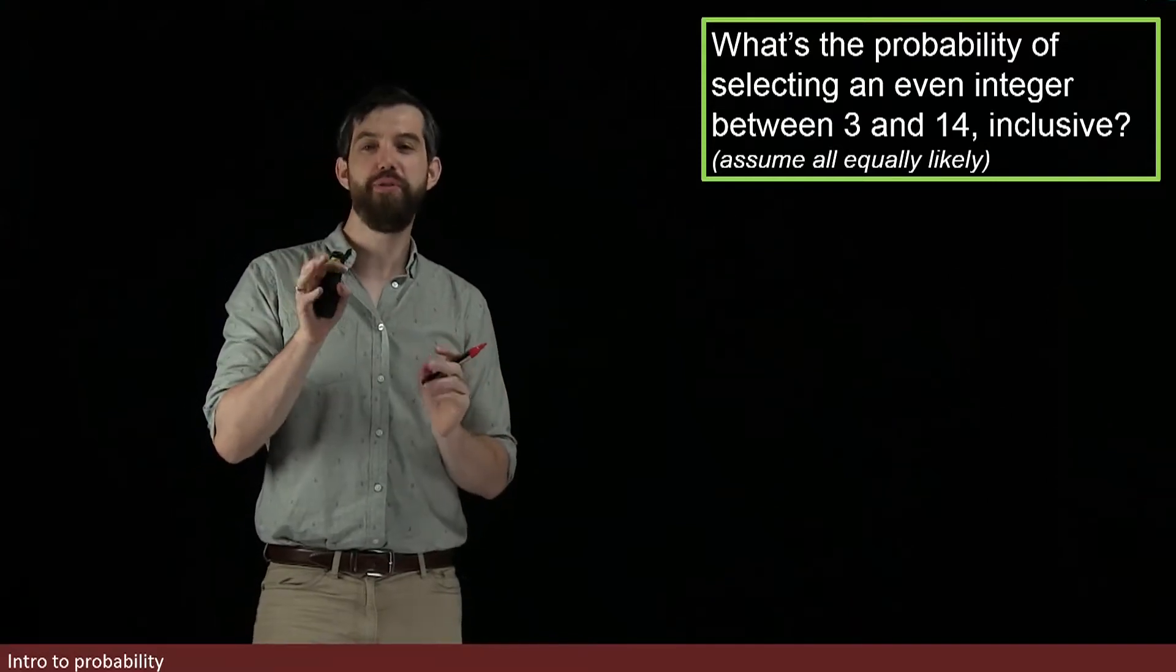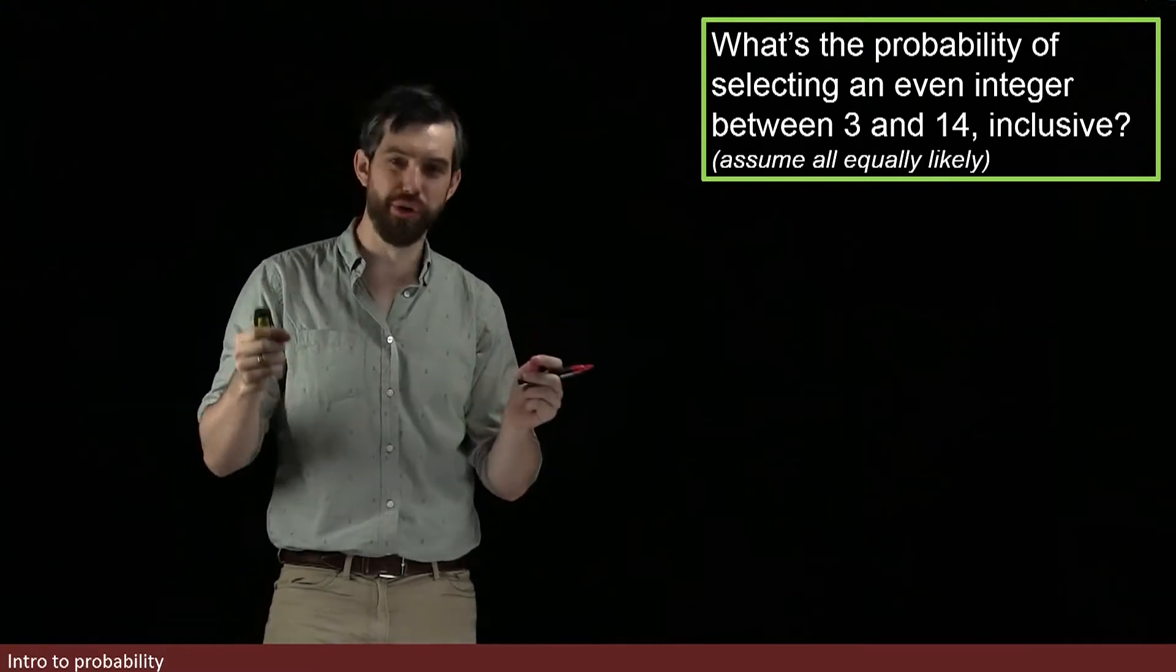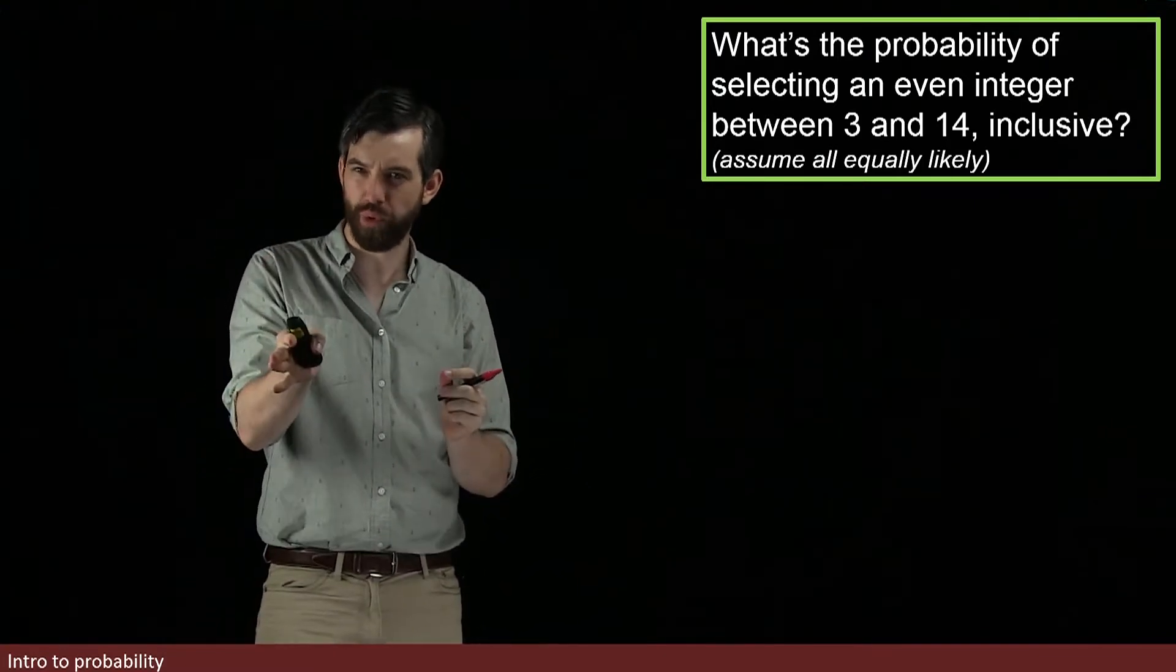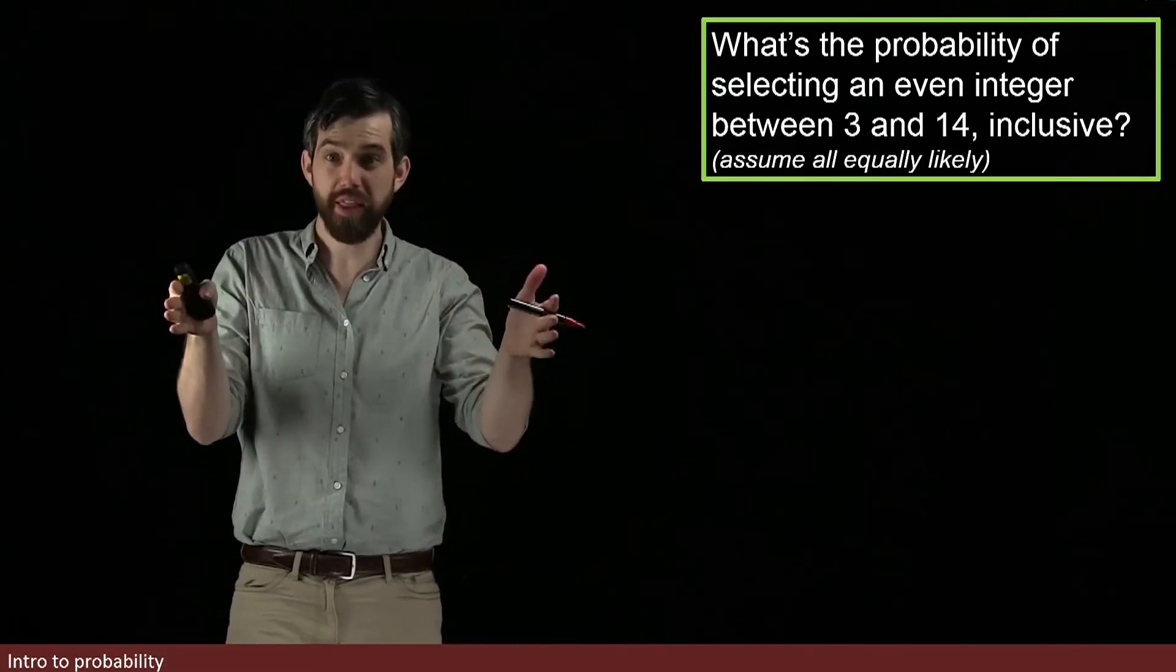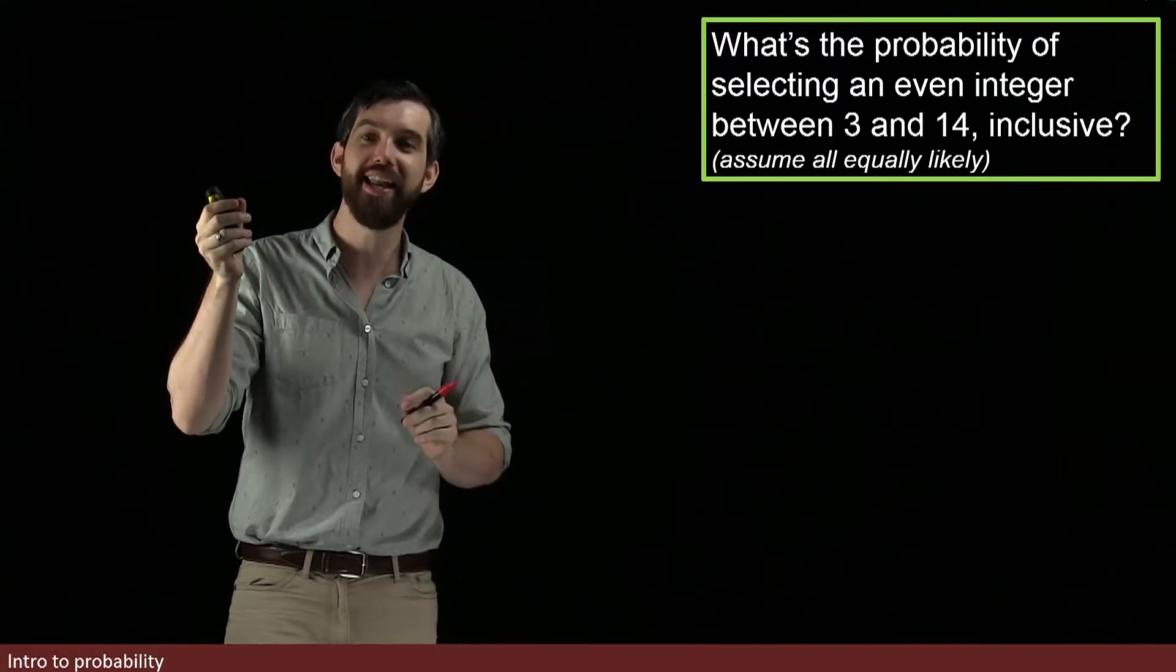In this example, we want to figure out the probability that if I randomly choose a number between 3 and 14, where I'm including the ends, I'm including 3 and I'm including 14, what is the probability that it's an even integer?